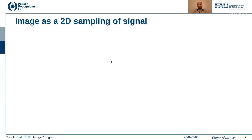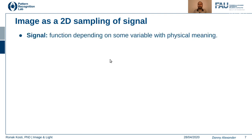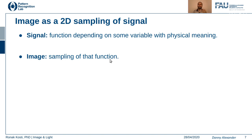We can also think of an image as a 2D sampling of signals. Signals are usually functions that depend on continuous variables in real life — for example, temperature, density, or gravity — and they have some physical meaning. An image can be viewed as a sampling of those signals. When we sample a 2D signal we generate an image.